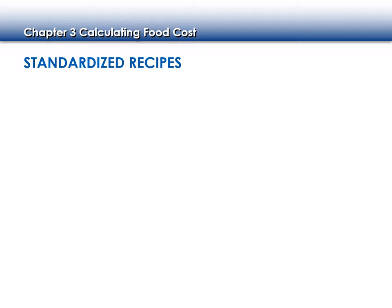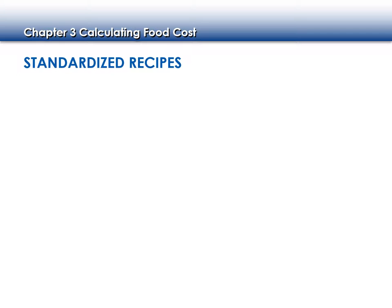One benefit of a standardized recipe is consistency. Remember how we use our triangle to determine our menu price? Well, that cost comes from a standardized recipe. So what we're selling it for is based on the cost of that standardized recipe. We need to make sure we're always giving the same number of servings.